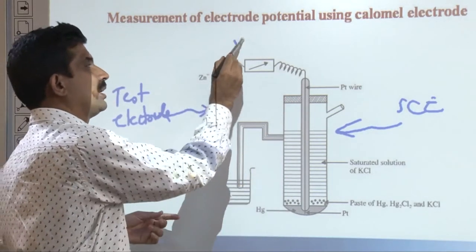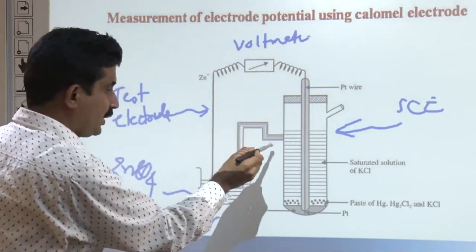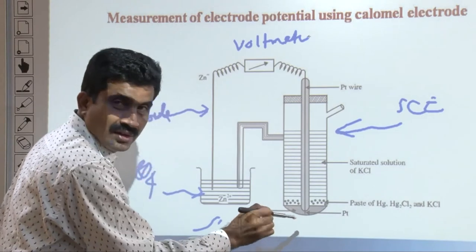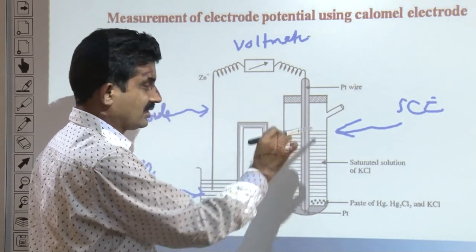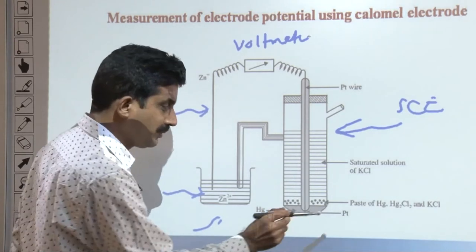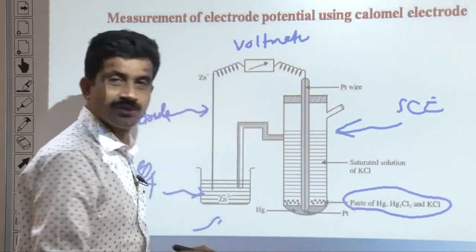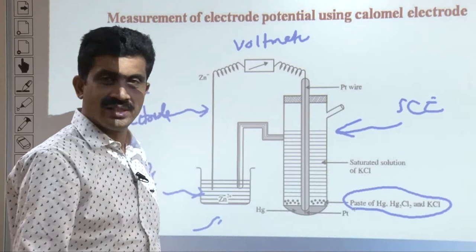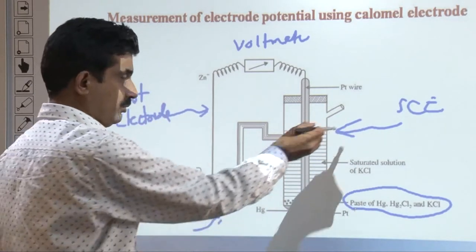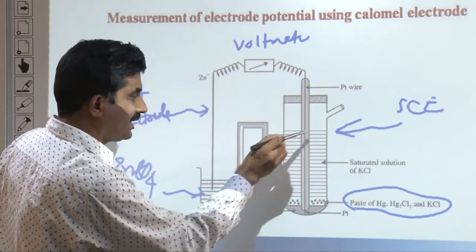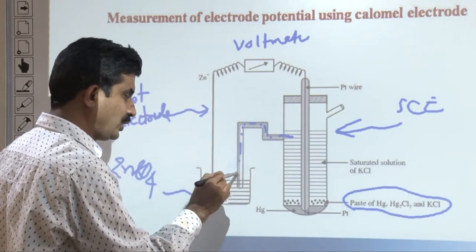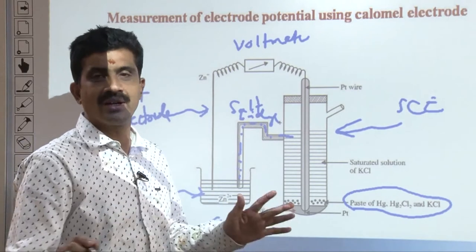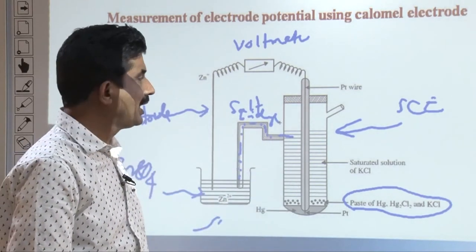So in this setup, a zinc rod is dipped in zinc sulfate of known concentration, and this is connected to the saturated calomel electrode. The side tube filled with saturated KCl acts as the salt bridge, completing the circuit. The saturated KCl fills this side tube, so no extra salt bridge is required, since KCl is the typical salt bridge composition. This forms a complete electrochemical cell.